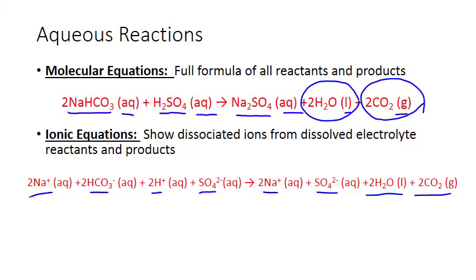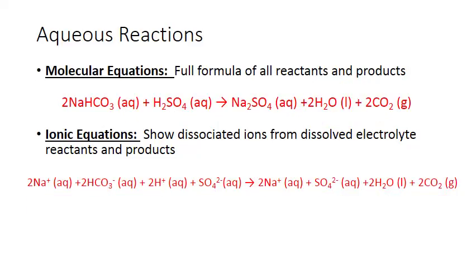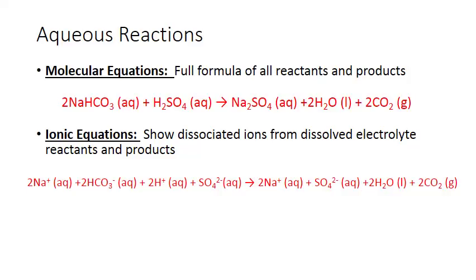The ionic equation only shows the ions that are formed during that dissolving process. There's another variation called the net ionic equation, which only shows the ions that combine to form products that are solids, liquids, and gases.